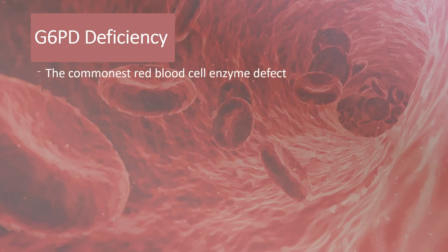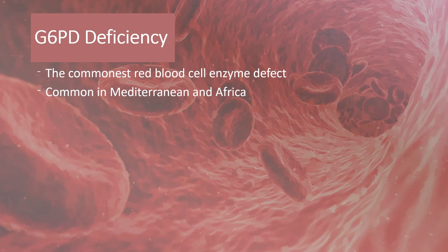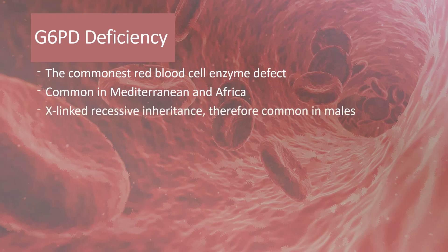Glucose-6-phosphate dehydrogenase deficiency is the commonest red blood cell enzyme defect. It is more common in people from the Mediterranean and Africa. It is inherited in an X-linked recessive fashion, and therefore commonly presents in males.